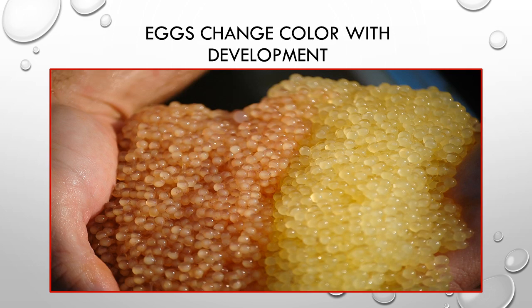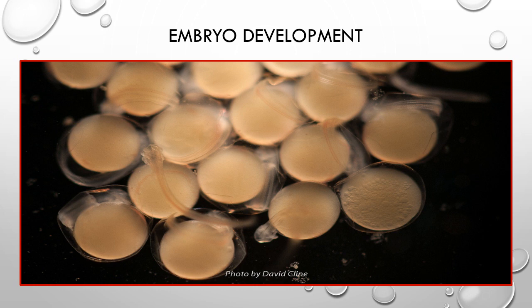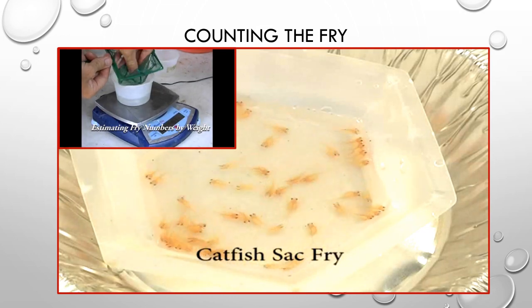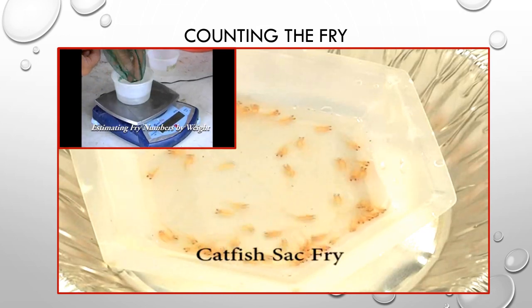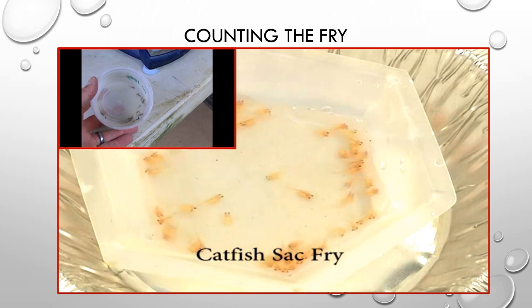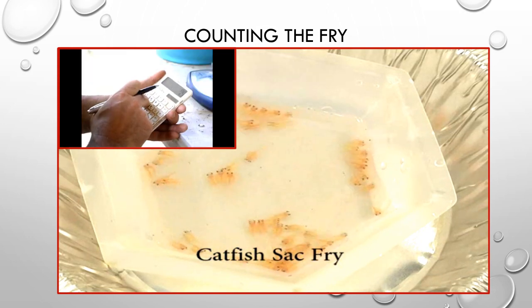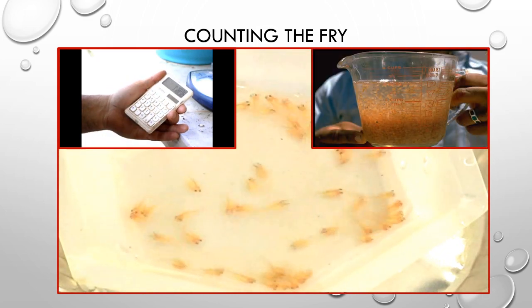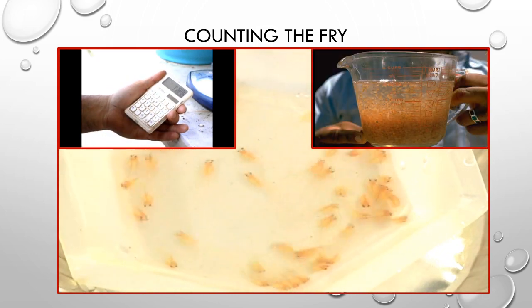As the eggs develop they change from a light yellow color to a rusty red color. Inside the egg the embryo develops until it's ready to hatch. When the eggs hatch they have a large yolk sac attached that will feed the fish for several days. The farmers need to know how many fry they have so they can accurately stock them into ponds. Several samples of the fry are counted and weighed, and using the sample data the rest of the fry can be counted either using volumetric displacement or by weight.